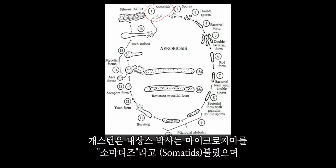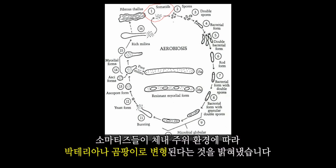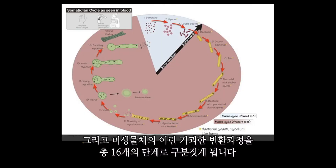Gaston Nassans had a different name for the microcymas — he called them somatids. Nassans was able to show how these different somatids could morph into bacteria and even fungi, and he was even able to divide the whole process into a 16-step cycle.